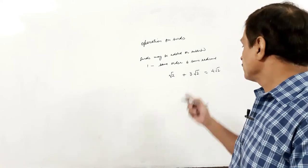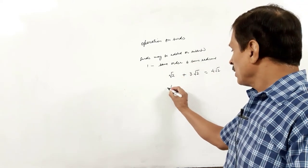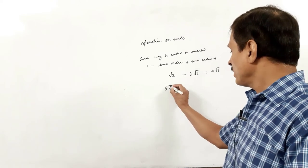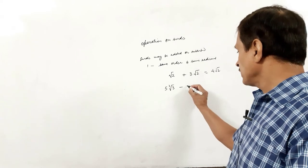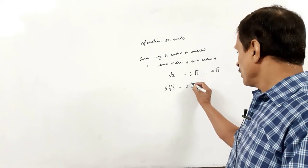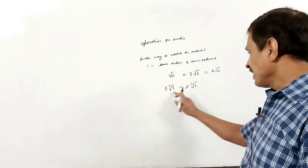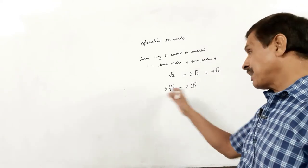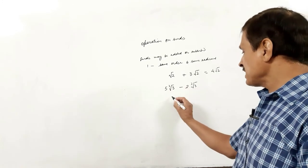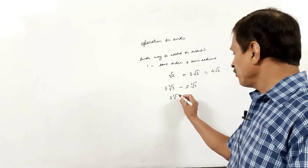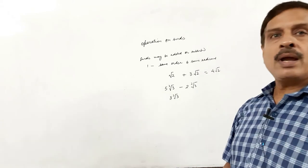We can also subtract surds if the same rule is followed. For example, 5 cube root of 3 minus 2 cube root of 3 — the order is the same and the radicand is the same, so we can subtract. The result is (5 − 2) cube root of 3, that is 3 cube root of 3.